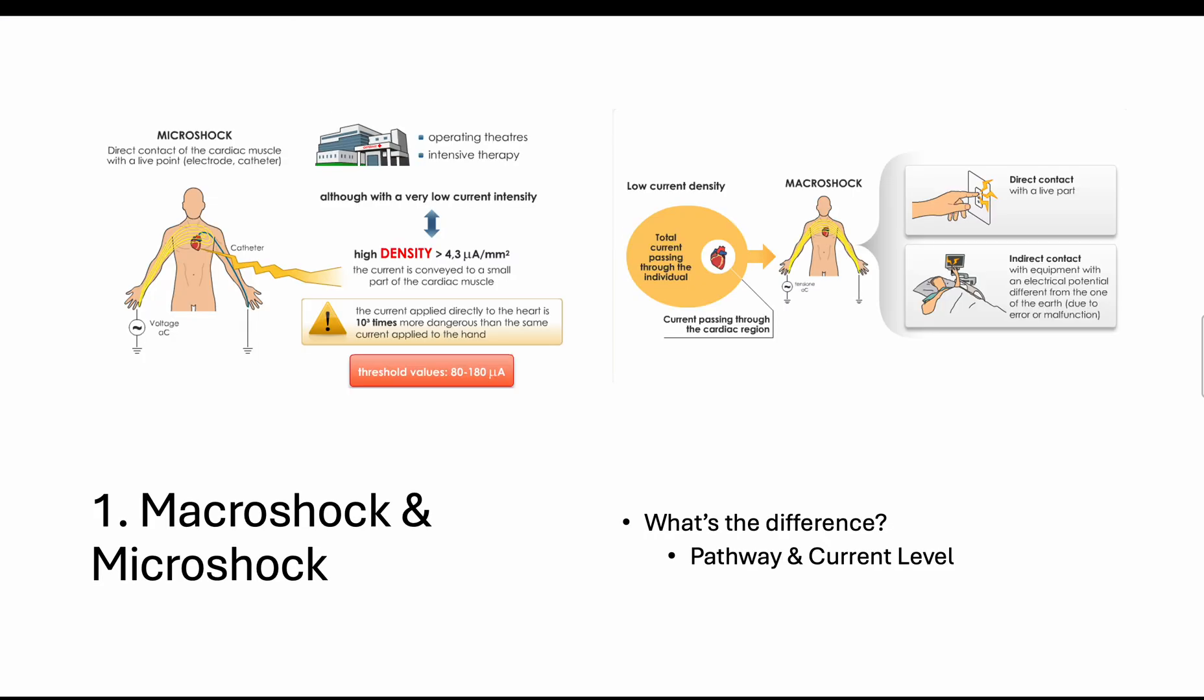The two phrases normally associated with different threshold levels of current flow are macroshock and microshock. What's the difference between these two? The main difference is the way the current travels through the human body, which is the pathway, and in terms of the current level as well - high current and low current. With microshock, it's a smaller current density. However, with microshock, the current flow is directly applied to the heart, and this is done in an invasive way.